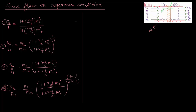For simplification of the calculation, what we do is take sonic flow as the reference condition. These are the property relations we have just derived. What we do is take condition at 1 as the sonic condition and condition at 2 as Mach number M. We put M1 equals 1 and M2 equals M in these property relations, and we will denote sonic flow conditions with a superscript star.